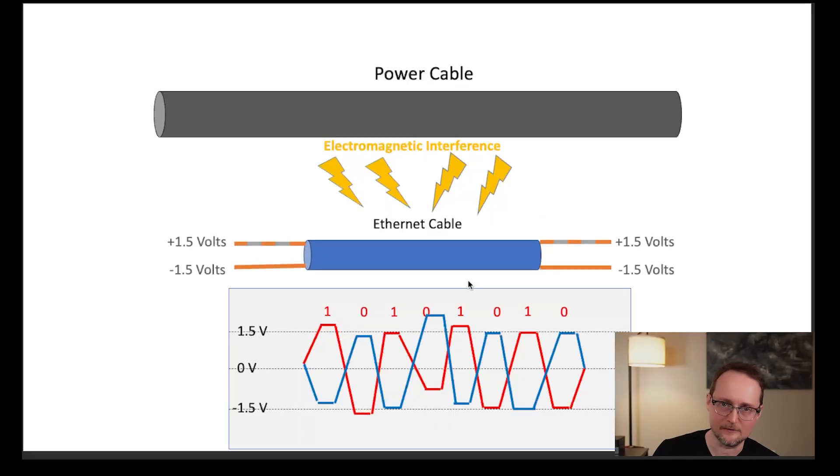To solve this problem, we introduce a second signal wire that has an equal voltage but opposite polarity. Now the receiving side can reconcile the signal. The electromagnetic interference will alter the voltage by the same amount but in opposite directions. So now we know why the wires are in pairs, but why are they twisted?